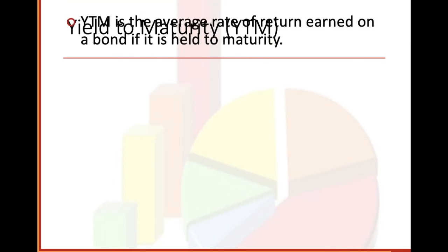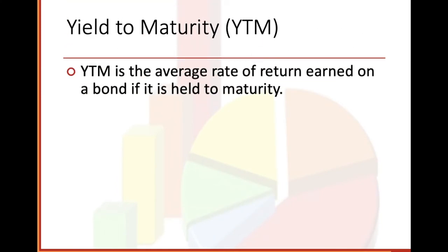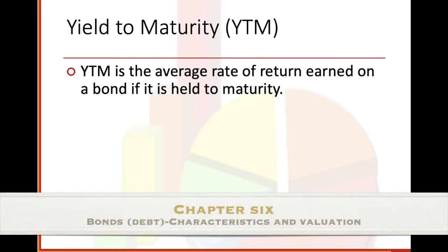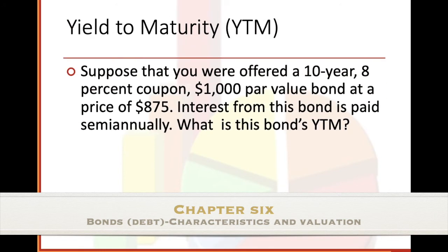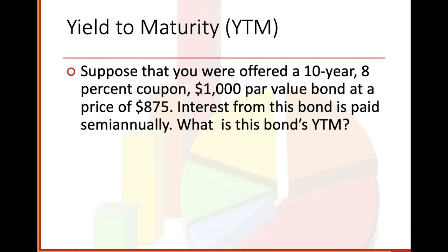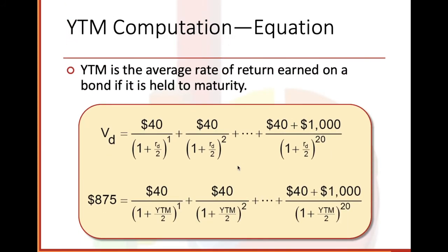Yield to maturity, YTM — the average rate of return earned on a bond if it is held to maturity, meaning we hold the bond all the way until the maturity date. Suppose you were offered a 10-year, 8% coupon, $1,000 par value bond at a price of $875, with interest paid semi-annually. What is the bond's yield to maturity? You're buying it at $875 with the expectation of receiving $1,000.